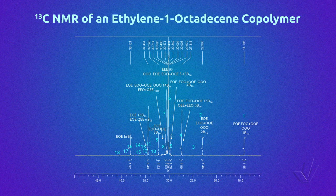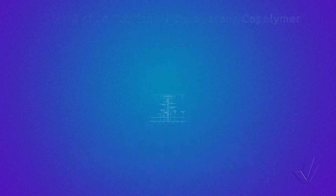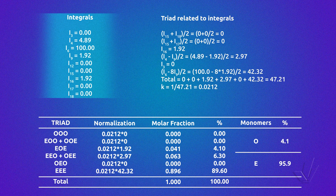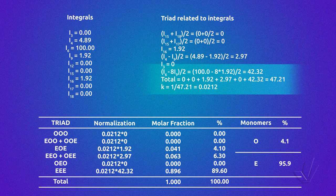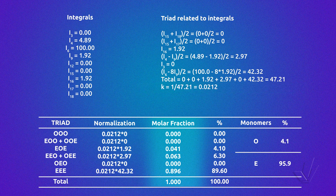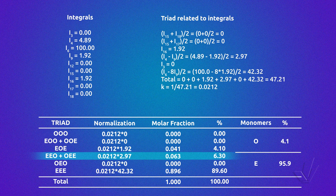Here we have an example of an ethylene-1-octadecene carbon-13 NMR spectrum. The 18 peaks of the table have been located and can be seen in blue. As we can see, not all the peaks are present. We have the integral of each peak at the bottom of the spectrum. So we take all the peak integrals that we need in accordance with the previous equations, then we introduce the integral values in the triad equations. We normalize by adding all the values and multiplying by the normalization constant to obtain the triad molar fraction, then multiply by 100 to obtain the triad percentage. This copolymer has 4.1% of triads EOE, 6.3% of triads EEO plus OEE, and 89.6% of triads EEE.